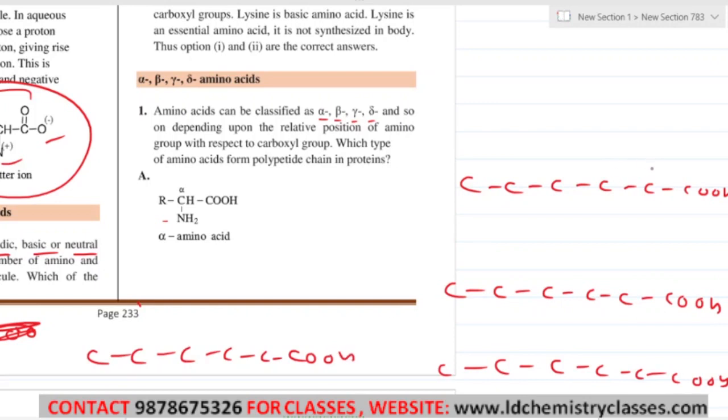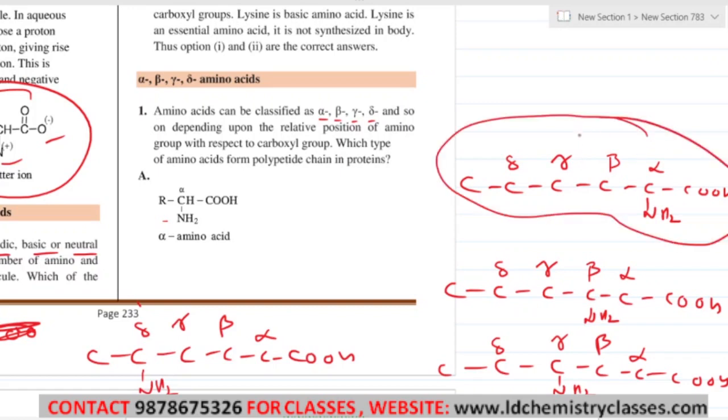Alpha, beta, gamma, delta. In this classification, don't count the carbon with COOH group, count the adjacent carbon.